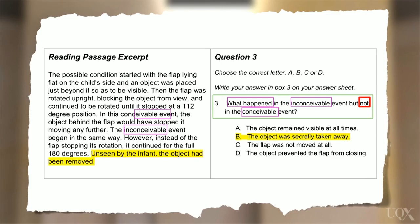And yes, it says here that the object had been removed. That is a paraphrase of taken away. And it also says that this was unseen by the infant. So that has a similar meaning to secretly. So B is the answer.